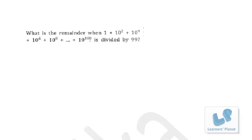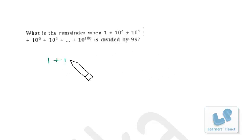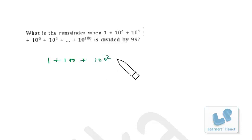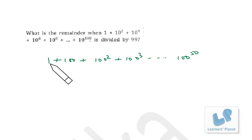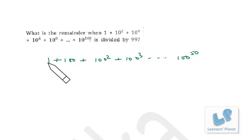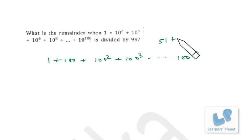This is 1 plus 100 plus 100 squared plus 100 cubed, till 100 raised to 50. This is 100 raised to 0, 100 raised to 1, so from this to this there are 50 terms, and plus this one — so in all there are 51 terms.